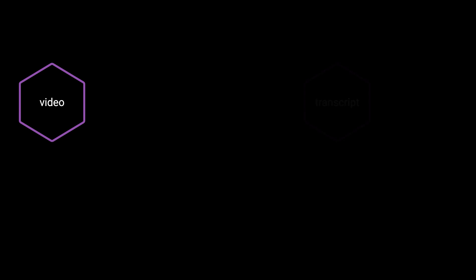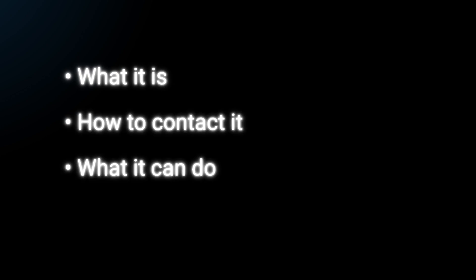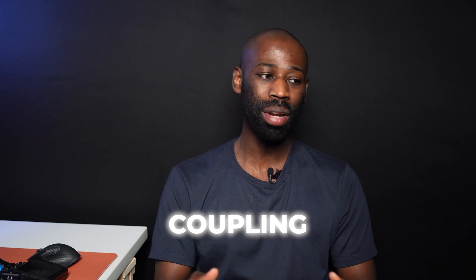Let's take a video service that needs to generate a transcript for its audio. To do this, it calls a separate transcript service through a REST API. But for this to work, the video service needs to know a lot about the transcript service — it has to know where it is, how to contact it, and what it can do. This dependency is called coupling, and coupling can lead to problems.